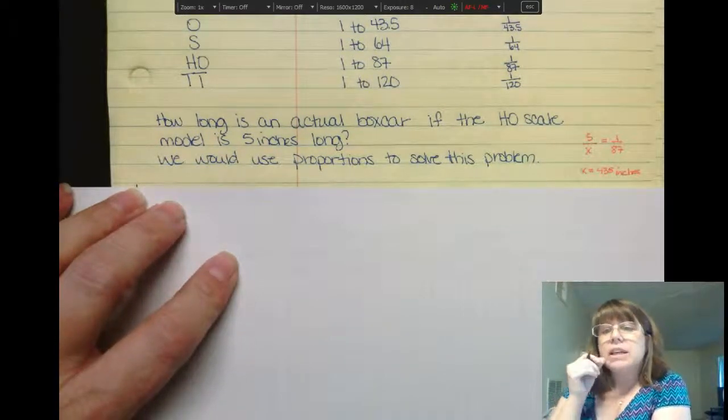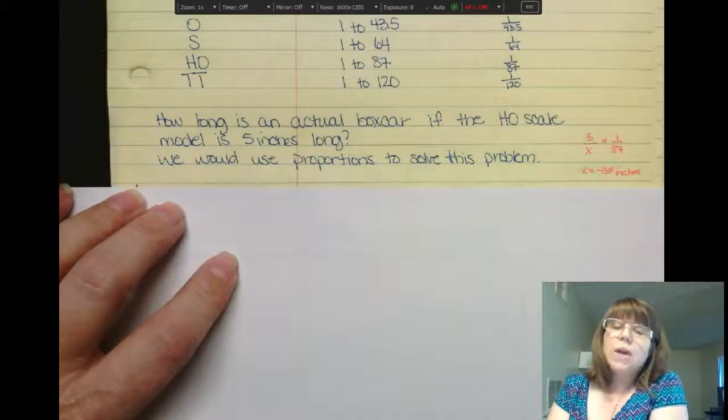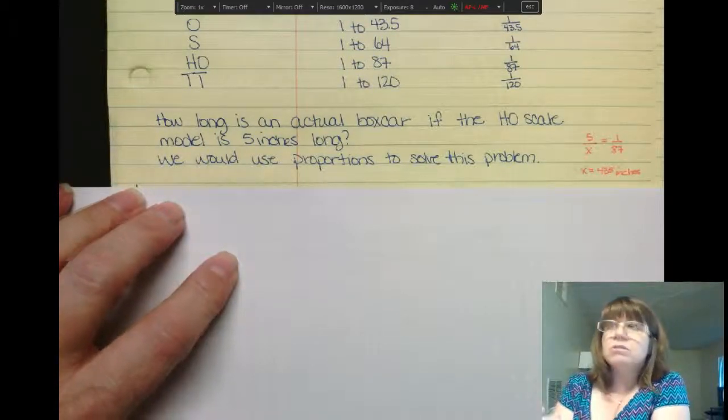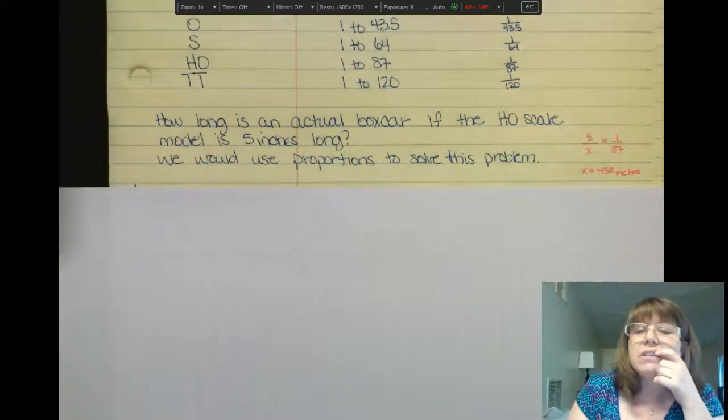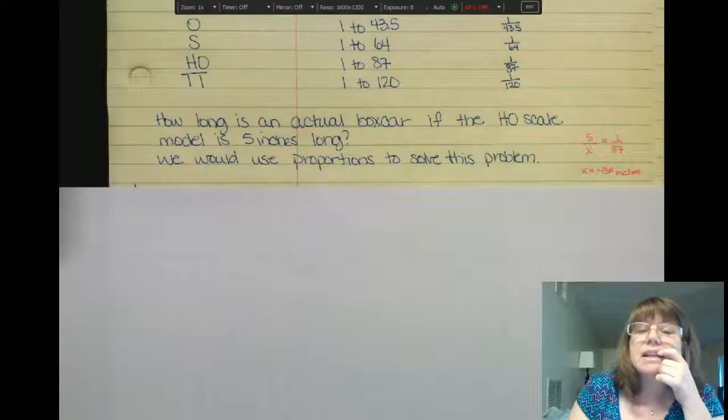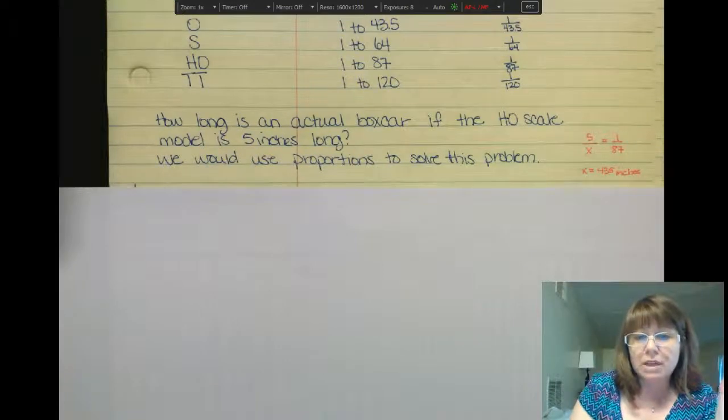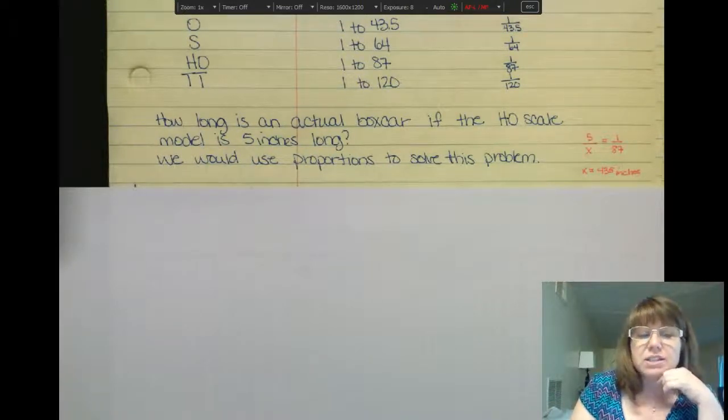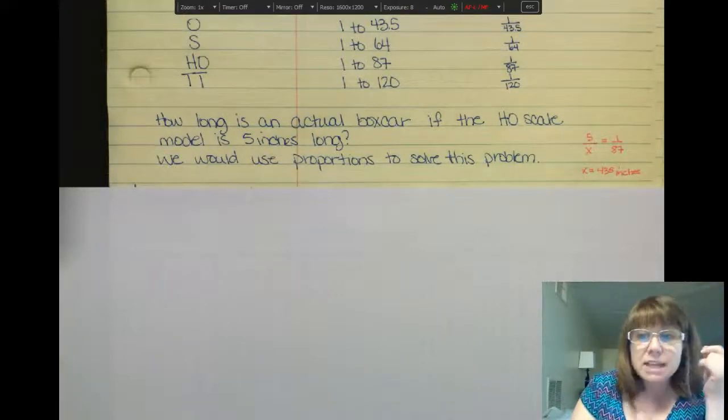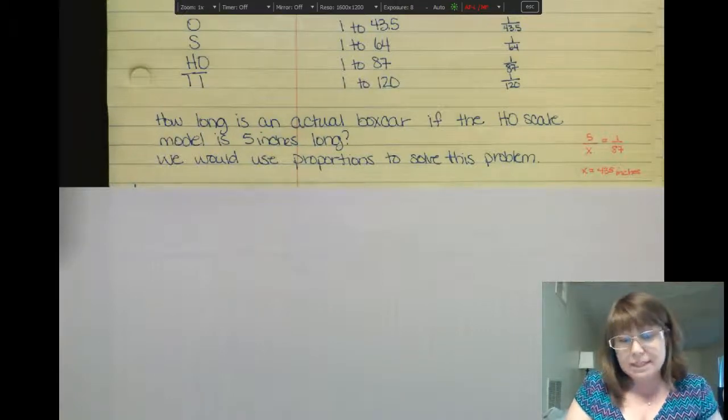And if we think about it, if we divide that by 12, I'm just going to round down to, well let's see, 12 goes into 43 nearly 4 times. So it is about 35 feet. That's how long an actual box car would be. The actual inches, 435 inches in feet, that's approximately 35 feet. And that makes sense. You always do want to look at your result and see if it makes sense.